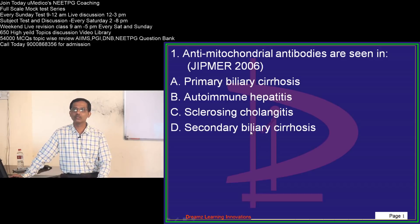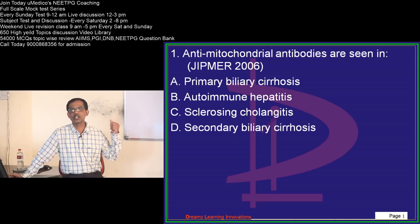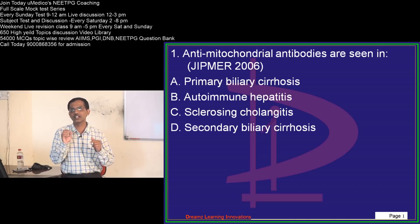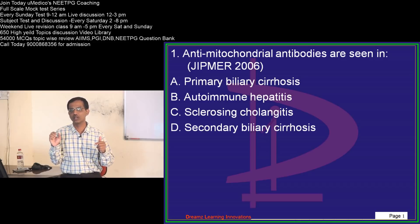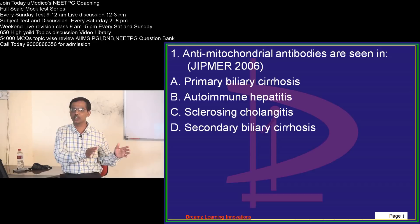I'd like to repeat the general instructions I give in each class. Read the question correctly before you look at the options, because questions these days are turning very tricky. This question is from 2006 so it's mostly straightforward, but as we move towards 2014, 15, 16, questions become very tricky. There is generally a trick in the stem of the question itself. Please read the stem correctly and try to understand what they want before jumping to the options.